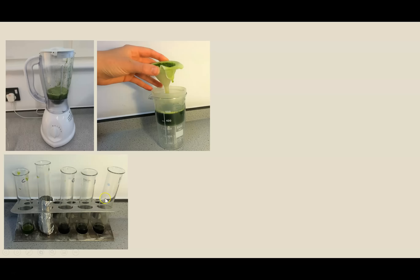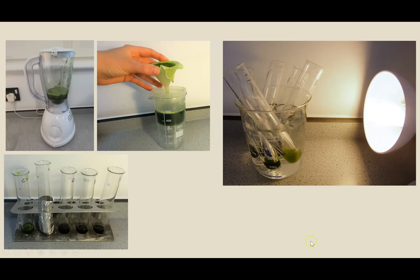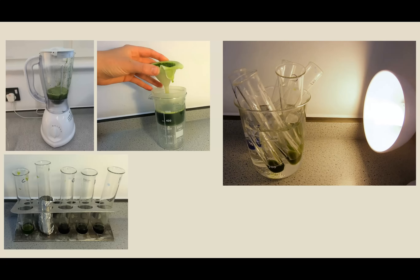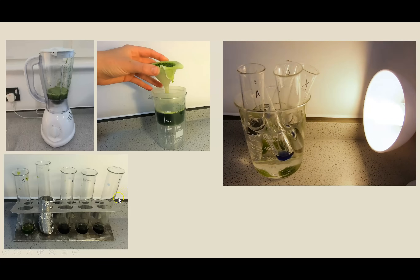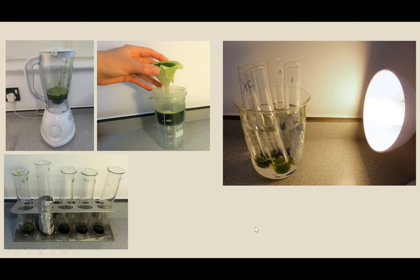With all my test tubes set up, I put them in an ice-cold water bath and have a light source, which is needed because it's the light-dependent reaction. At this point, the stop clock is started and I time how long it takes the two experimental tubes to turn exactly the same green color as test tube C. You'll notice I'm rotating the test tube positions because I only have one lamp source, meaning there isn't an equal distribution of light — which is a limitation. I stop the clock when test tube X matches the color of test tube C.